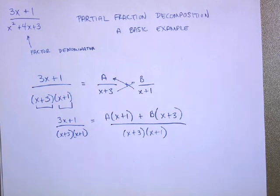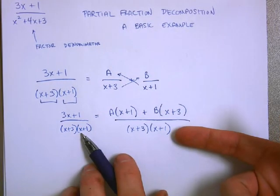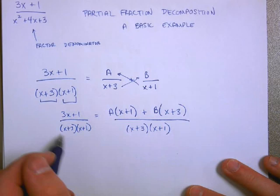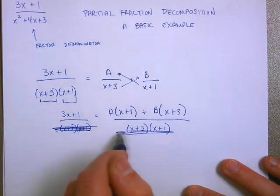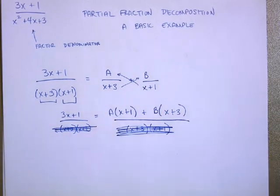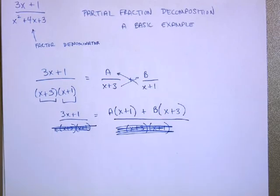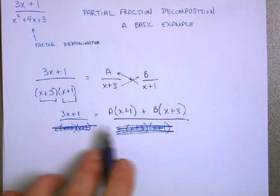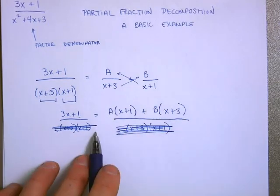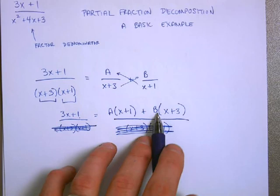Well, notice, if I'm dividing both sides by (x+3) times (x+1), they basically cancel each other out, which means that the numerators must be equal to each other. Now, we're a little bit closer to solving for A and B. Next step. If I know 3x+1 is equal to all this junk over here, my next step is to distribute the A and distribute the B.